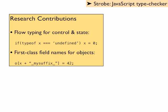Both type testing and first-class field names show up in other scripting languages, like Ruby, Python, and Lua. The contributions of the Strobe type checker aren't unique to JavaScript, and could be applied there as well.